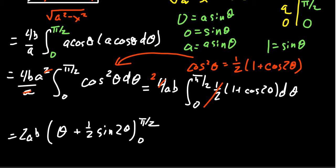We have 2ab in front. The antiderivative of 1 is theta. The antiderivative of cosine of 2 theta will be one half sine of 2 theta as we go from 0 to pi halves. What happens is we plug these things in. 2ab. When we plug in pi halves, we get pi halves plus one half sine of pi. The 2 pi over 2 becomes pi. Sine of pi equals 0, so that's going to disappear.